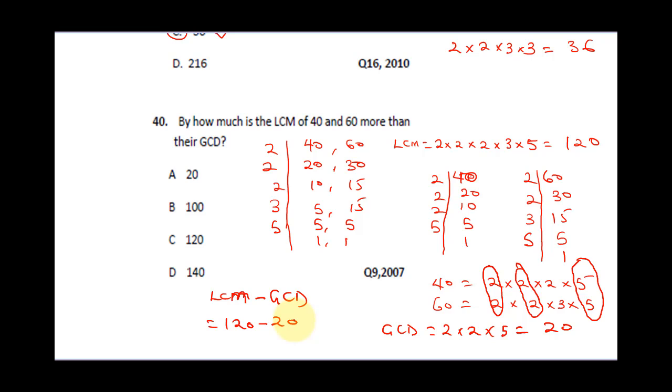So the difference is LCM minus GCD, which gives us 120 minus 20, and the final answer is 100. The correct answer is B.